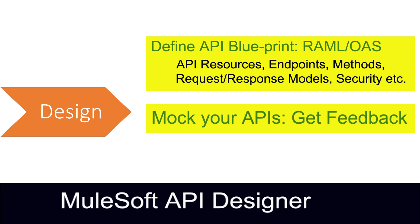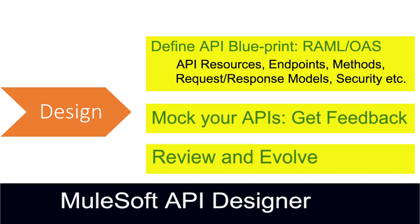In this phase, we also mock our APIs and get feedback from developers, because we have to go through a series of cycles and iterations within the design phase to get review. Based on that review, we continue to evolve, and finally we come to a position where we have a proper, well-defined, properly structured, and agreed-upon blueprint of the API in the form of specifications. Design phase is a very important phase for a design-first approach of API-led connectivity, and we need to be very critical, careful, and specific when designing the blueprint.